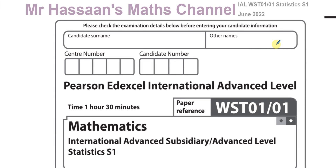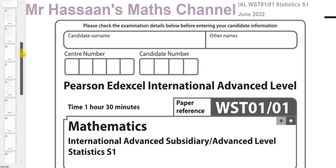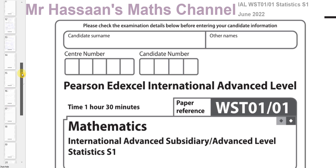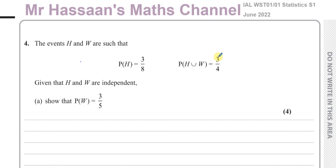Welcome back to Mr. Hassan's Maths Channel. I'm now going to go through question number 4 from this June 2020 paper. This question is about probability. It says the events H and W are such that the probability of H is equal to 3 over 8, and the probability of H union W is equal to 3 quarters. Given that H and W are independent, show that the probability of W is equal to 3 fifths.